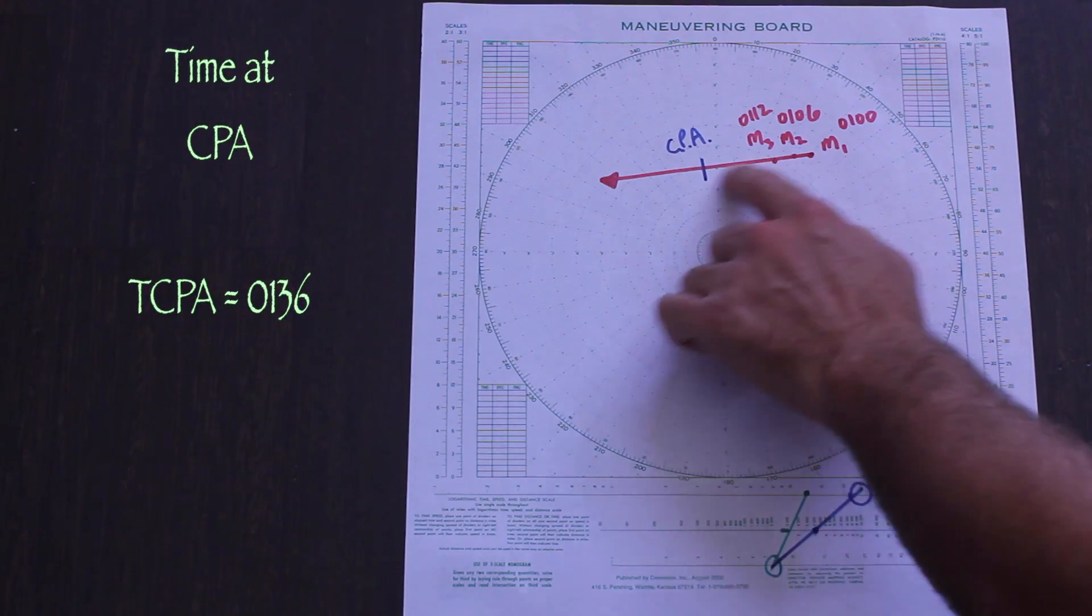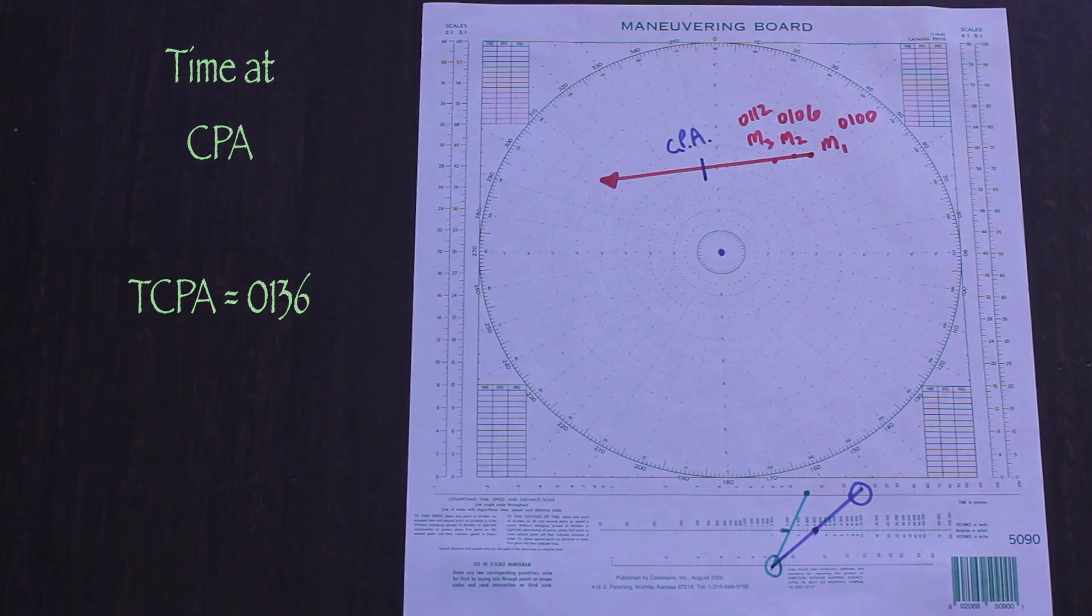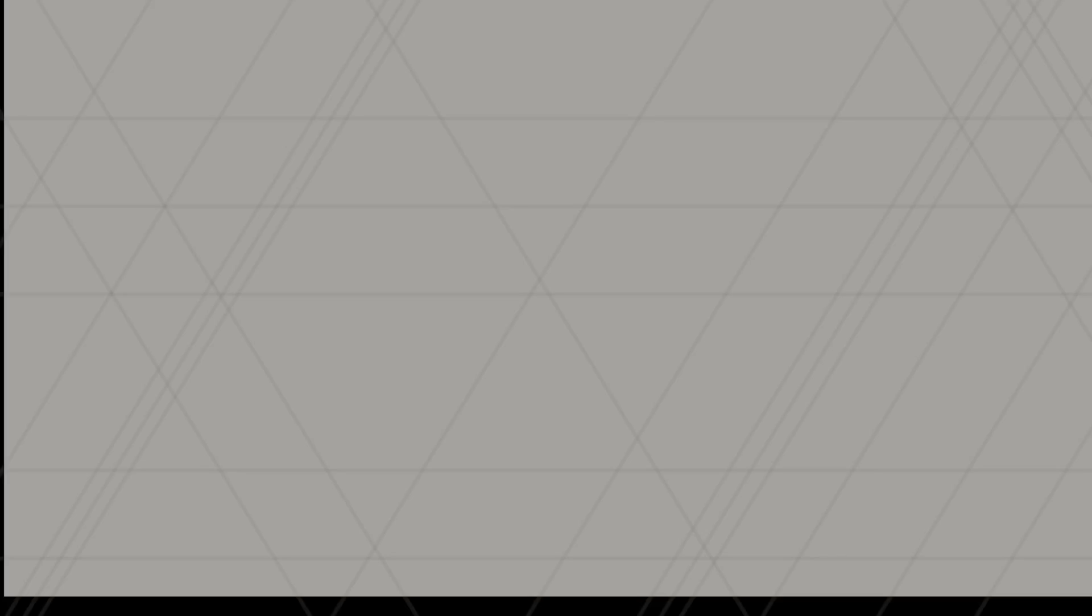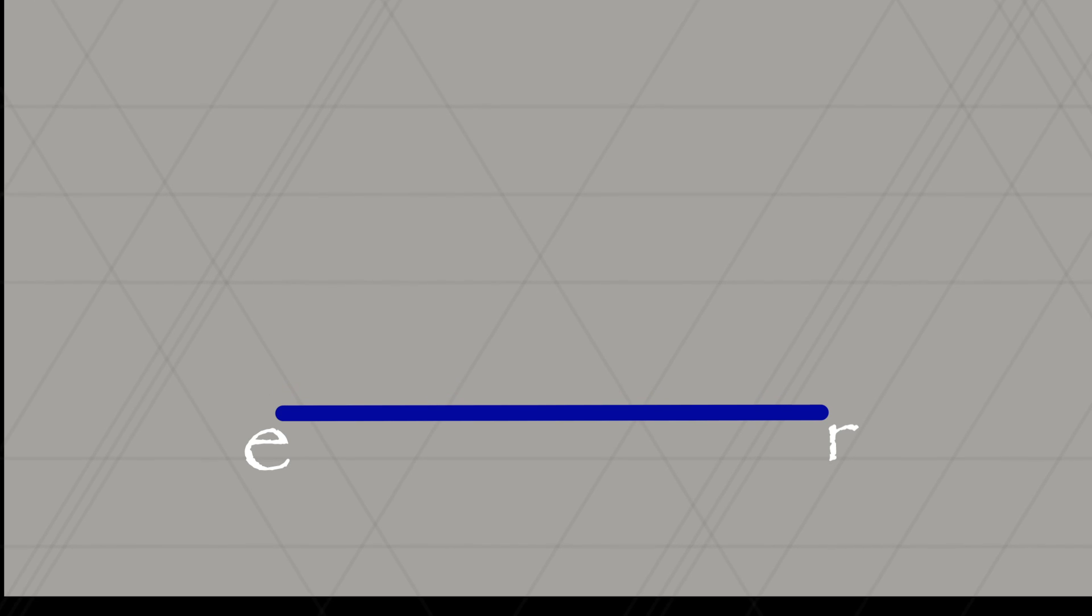Now it's time to calculate the contact's actual course and speed, and we need to use more vectors. Going forward, we want to be consistent in our labeling, so we'll refer to the speed triangle. This is just a triangle with the apexes E, R, and M.